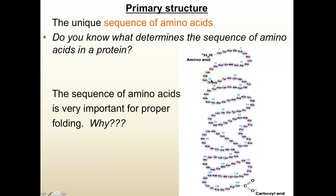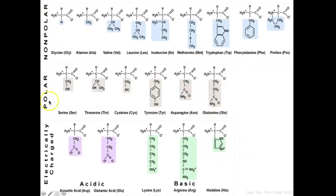What goes next to each other is critical because you're going to have to start folding this up. It's very similar to having yarn — the way you knit the yarn can make a sweater, a sock, or a ball. The three-dimensional product you get depends on how you fold or knit that primary sequence together. The sequence of amino acids is critical for folding because of their different natures. For example, if you have a whole bunch of nonpolar amino acids together, that part of the protein is going to fold inside, away from the water, or it could be inside a membrane.